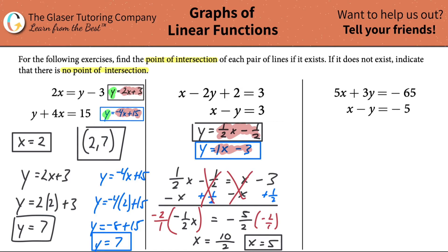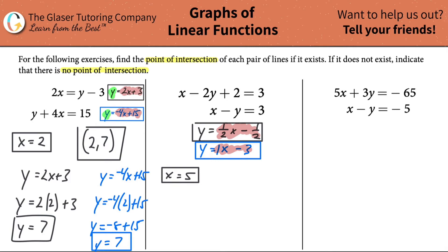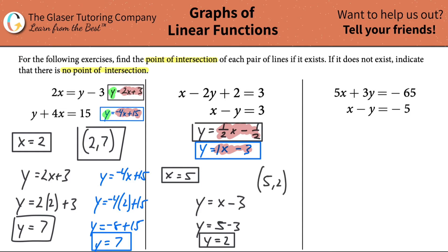Now that x = 5, I'll use the second equation to avoid fractions: y = x - 3 = 5 - 3 = 2. So the point of intersection for this pair of lines is (5, 2). Graph it out and you can verify.